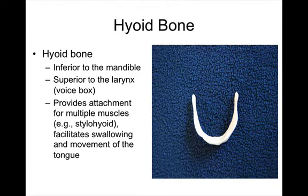Then we have the hyoid bone — a somewhat unusual bone located inferior to the mandible but superior to the voice box. It provides attachment for various muscles, including the stylohyoid muscle, which is simply named for its attachment to the hyoid bone. This bone is unique in that it doesn't directly articulate with any other bone, unlike, for example, the femur which connects to the tibia.